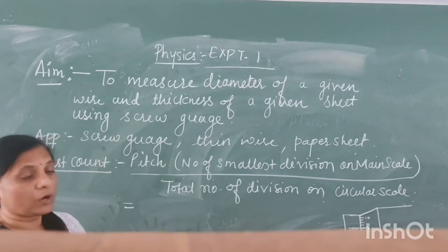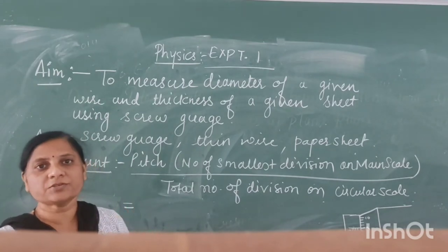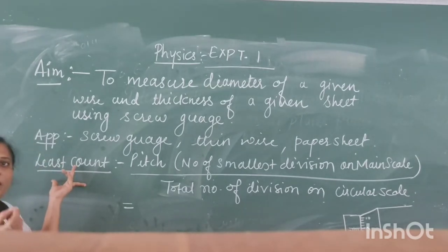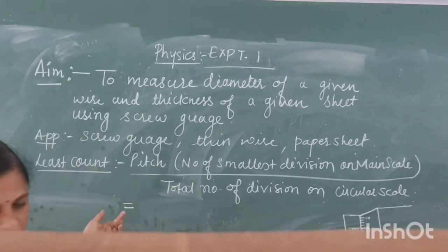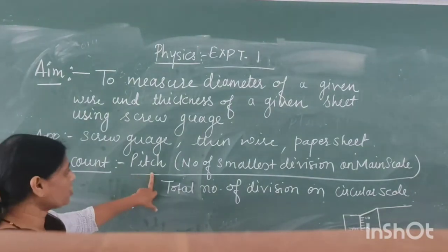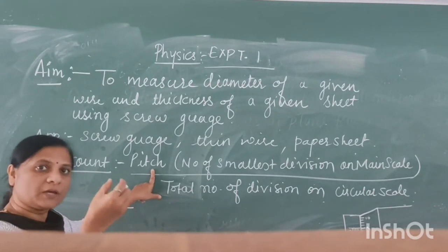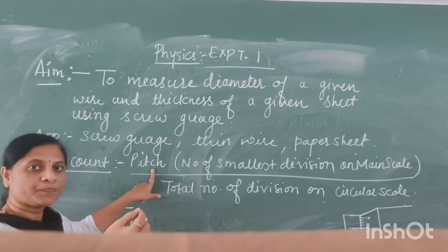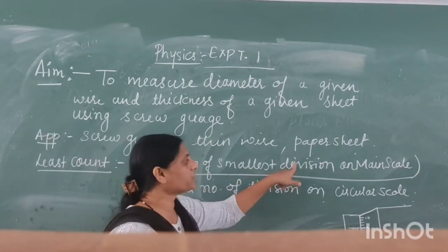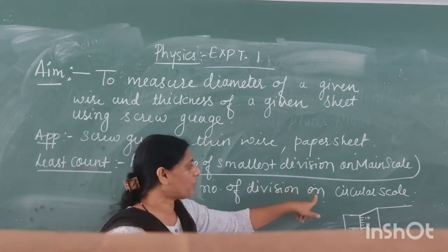Before that, you must know what the least count means. For any small instrument, we have to find out its least count. The formula for least count involves pitch. Pitch is the smallest distance that we can measure between two lines — the horizontal distance — also known as the number of smallest divisions on the main scale divided by total number of divisions on a circular scale.